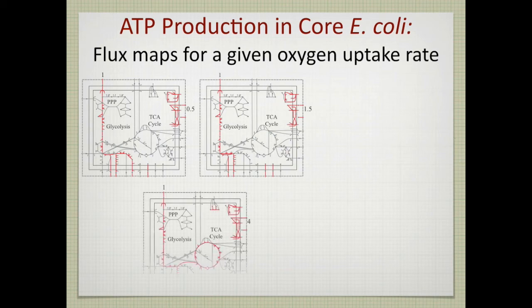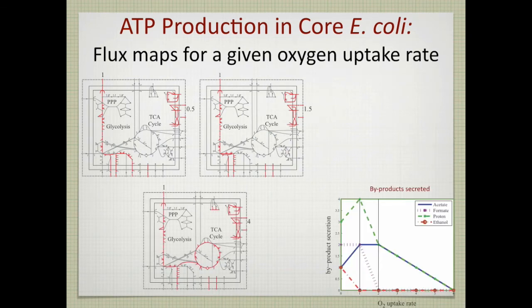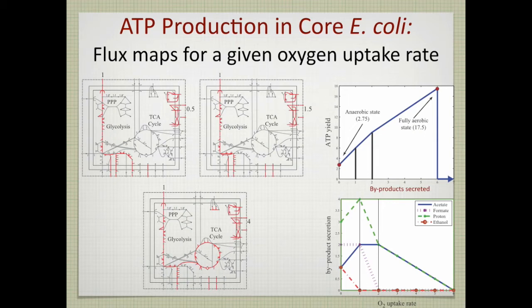We can look at this in more detail by examining the flux maps. These flux maps are for oxygen uptake rates of 0.5 (middle of phase one), 1.5 (middle of phase two), and 4.0 (middle of phase three). In the third phase flux map, the TCA cycle is being used and so is the electron transport chain, but a little acetate is secreted. In the first phase, where oxygen uptake is 0.5, there is no use of the TCA cycle, and you see three red lines going out corresponding to the three fermentation products.